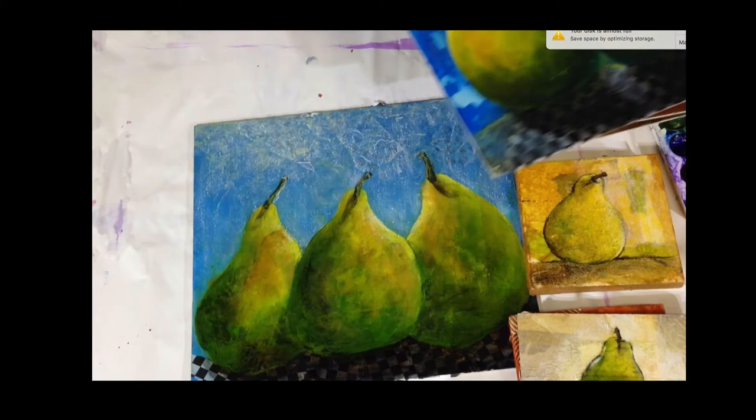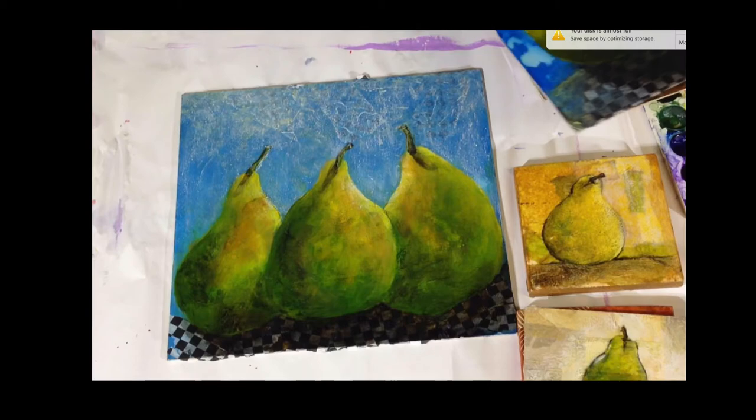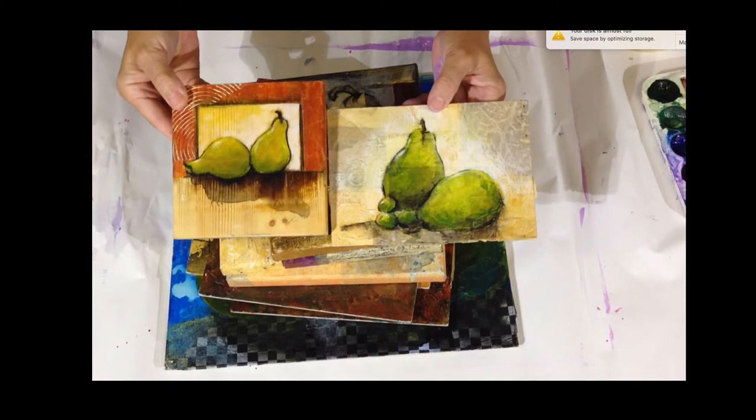Here you have tissue paper and other kinds of papers with the pears. I have a trio of pears there and then this tiny little wooden one. You can work on wood as well with collage. Here's more wooden ones and then a board with textured papers with pears on top.